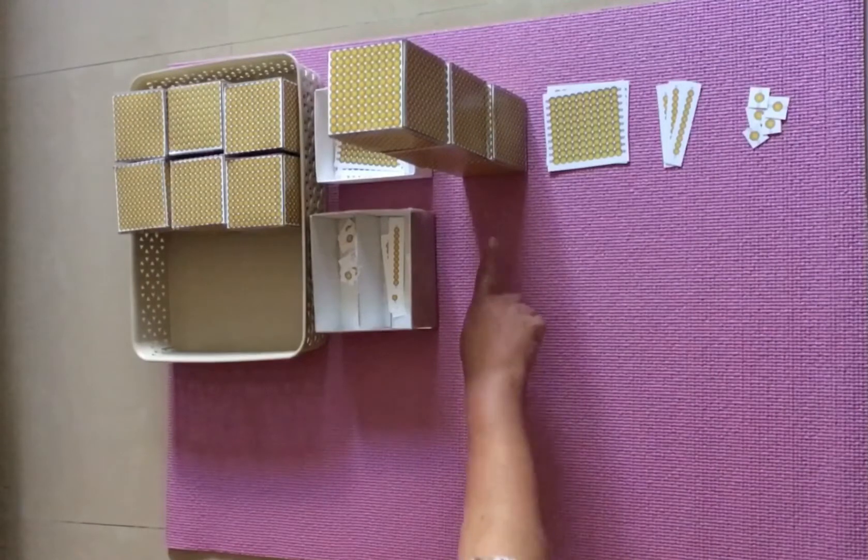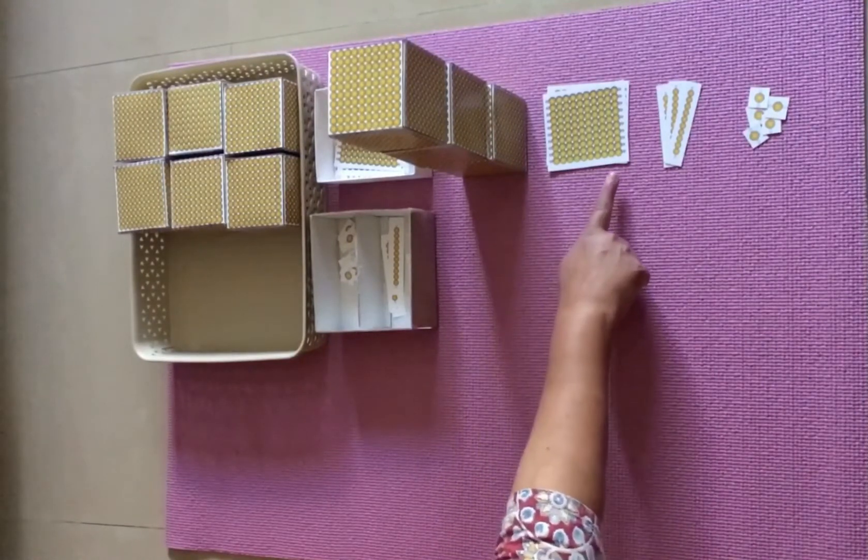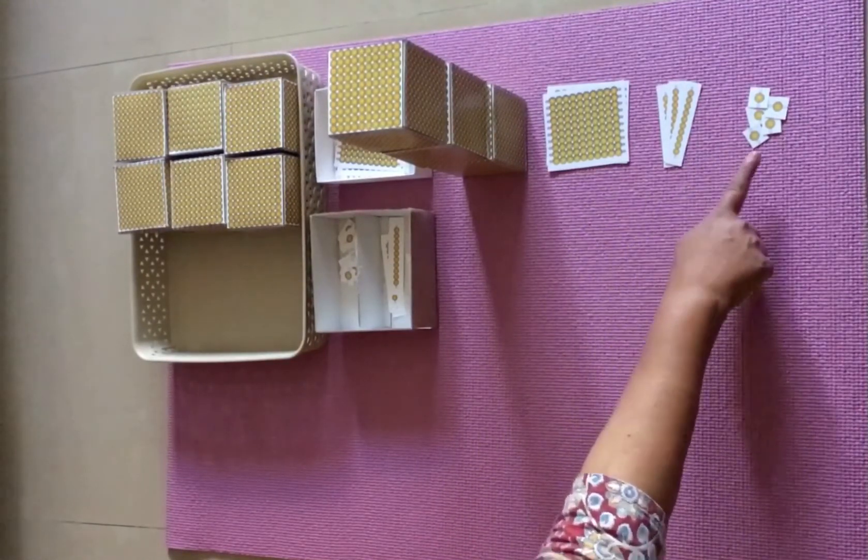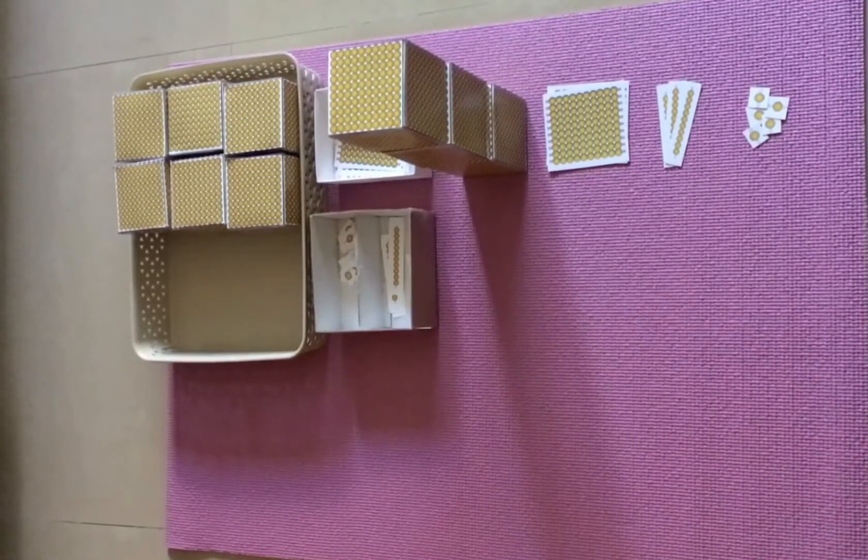Now read the quantity once again. 3 thousand, 2 hundreds, 3 tens, and 5 ones. Now ask the child, can you bring the same in card material?